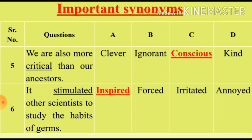Question 5: 'We are also more critical than our ancestors.' We will see the synonym for the word 'critical'. Option A: Clever (chalak). Option B: Ignorant (jahil). Option C: Conscious (bahabar). Option D: Kind (meherban). Options A and D are irrelevant. We will select from Option B and C. Option C, Conscious, is the right synonym for the word 'critical'.